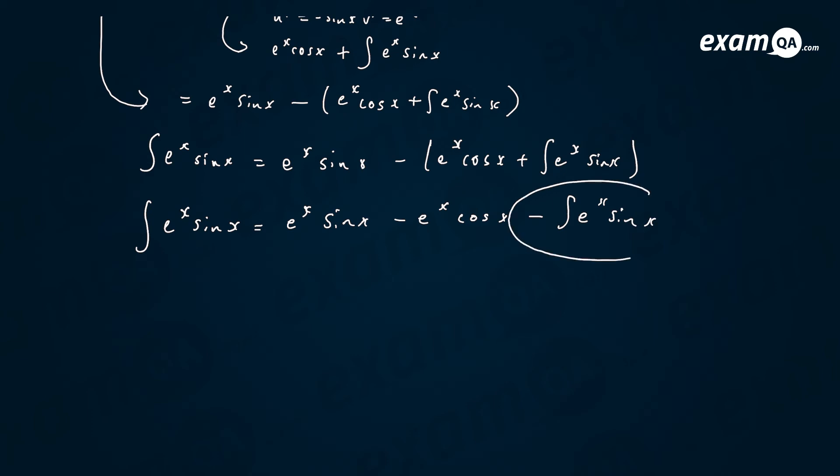Now, if I add this to both sides, it seems like we're cheating, but this is valid. There's nothing I've done that goes against any algebra principle, right? If I add the integral of e to the x sine x to both sides, we get this. 2 e to the x sine x integrals on the left-hand side, and then just this stuff on the right-hand side.